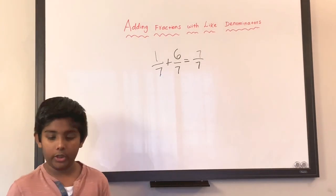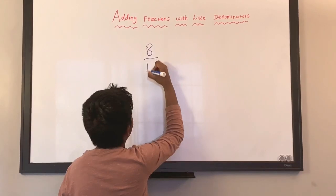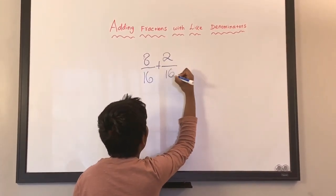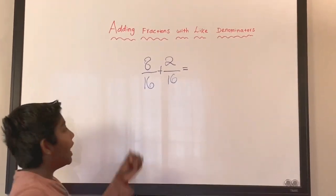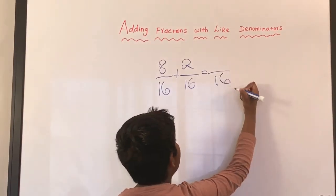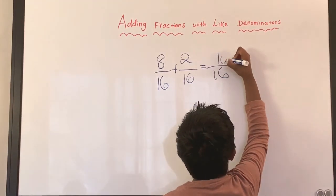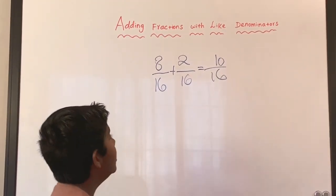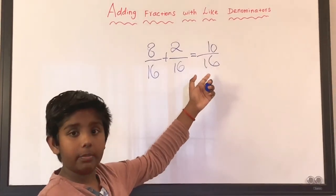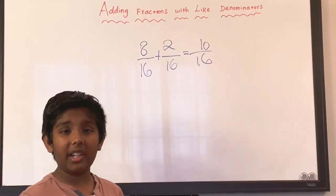Now let's do this example: eight over sixteen plus two over sixteen. We have the same denominator, so that's going to stay as itself. We have to add the numerators: eight plus two equals ten. We can still simplify these two numbers because they are both even numbers — if you can simplify, you should do it.